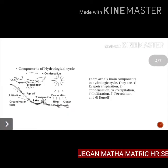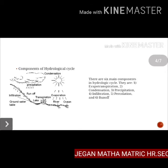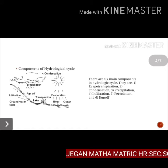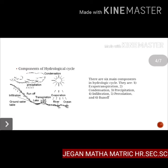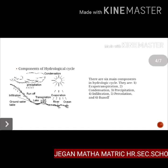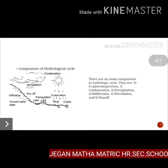There are six main components of the hydrological cycle: first is evapotranspiration, second is condensation, third is precipitation, fourth is infiltration, fifth is percolation, and sixth is runoff.